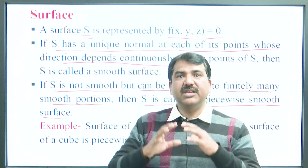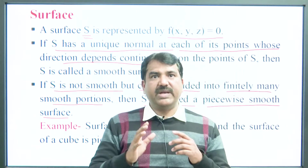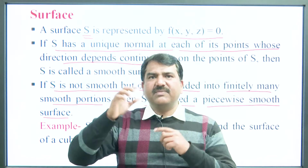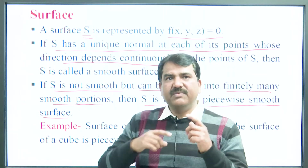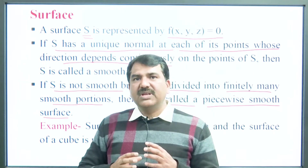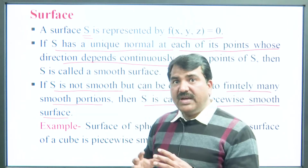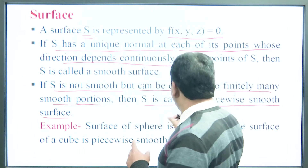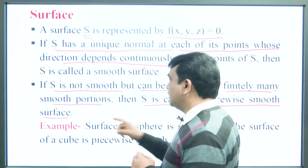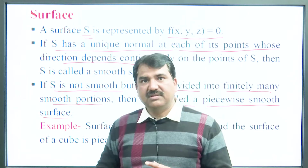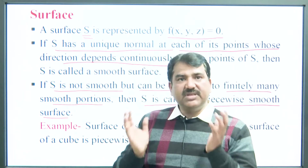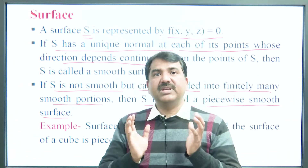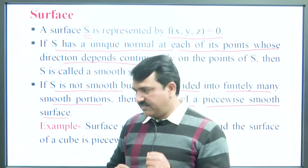For example, if you consider the cube — the cube has six surfaces, and for each surface there is a different normal vector. So the cube is a piecewise smooth surface, while the surface of the sphere is the smooth surface.